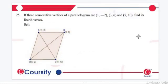Now question number 25. If three consecutive vertices of a parallelogram are given, find its fourth vertex. So finding the fourth vertex, we must know the midpoint of this diagonal is equal to the midpoint of the other diagonal.